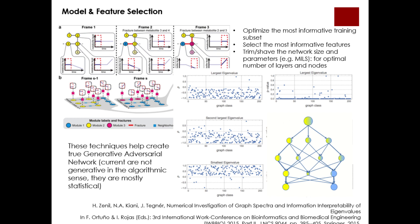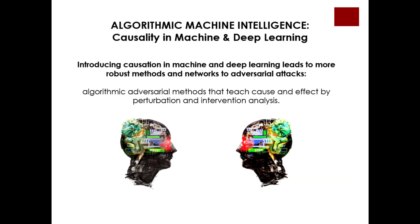Soon in the algorithmic complexity calculator, you will be able to provide your data and the calculator will retrieve a set of very abstract general candidate models able to explain the data, together with features extracted in the process and identified as key for the causal explanation of the system. The take-home message is that with all our tools and methods based on algorithmic probability, we can make significant contributions to introduce causation in machine and deep learning and make approaches such as deep neural networks more robust. We call this approach algorithmic machine learning or algorithmic machine intelligence. In the next lecture we will see some other possible directions of future research related to these ideas.